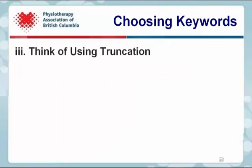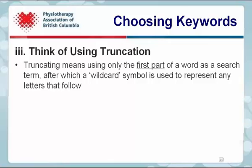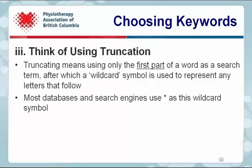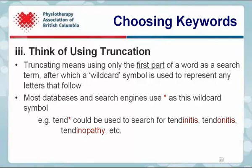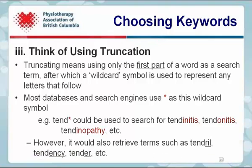You should also consider using truncation. Truncating means using only the first part of a word as a search term, after which a wildcard symbol is used to represent any letters that follow. Most databases and search engines use an asterisk as this wildcard symbol. For example, tend* could be used to search for tendinitis, tendinopathy, etc. However, it would also retrieve terms such as tendril, tendency, tender, etc.